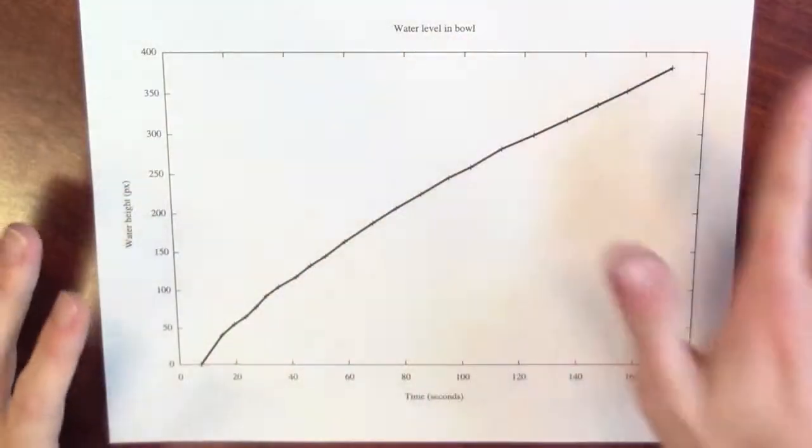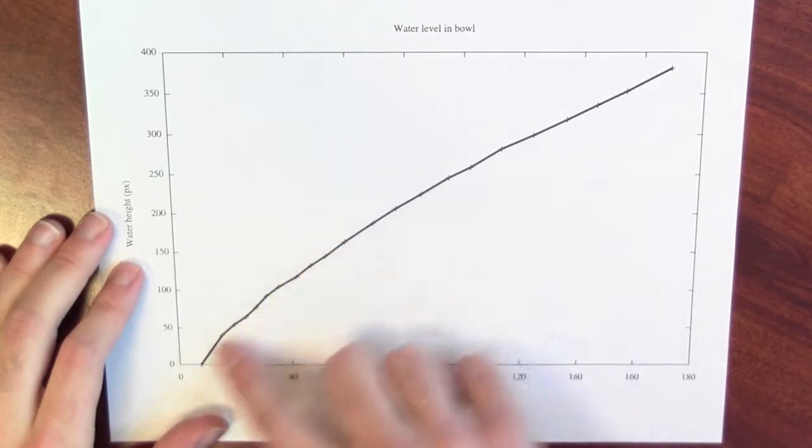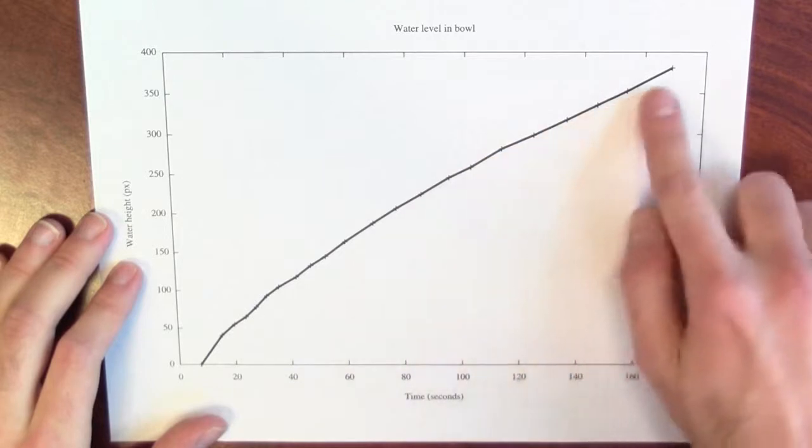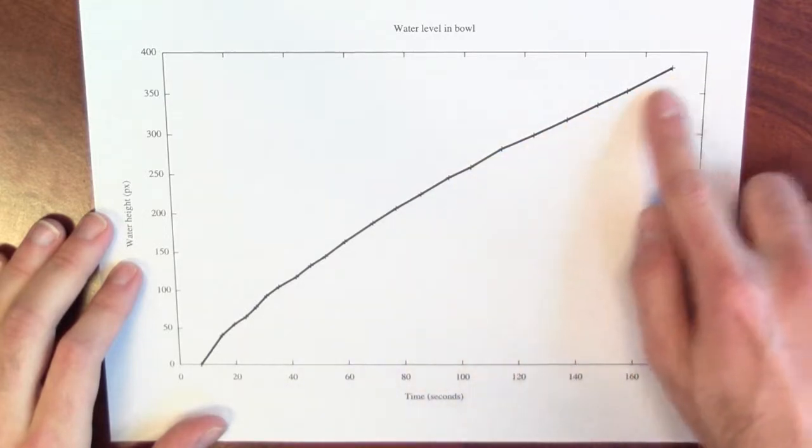What do you notice about this graph? So one thing I notice right off the bat is that the water level increases fairly rapidly at first, but at the end of this process, the water level is still increasing, but it's increasing more slowly.